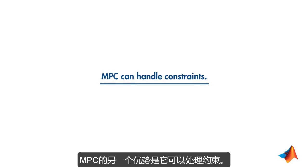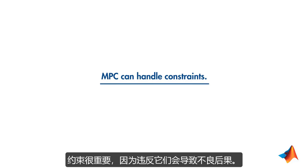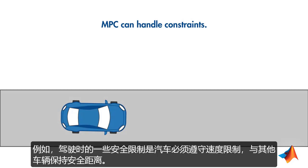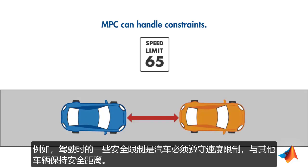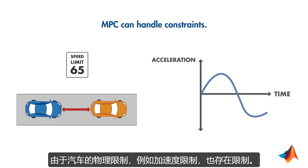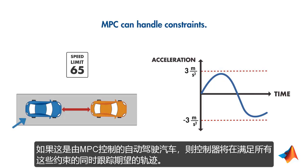Another strength of MPC is that it can handle constraints. Constraints are important because violating them can lead to undesired consequences. For example, some of the safety constraints while driving are that cars must obey speed limits and maintain a safe distance from other cars. There are also constraints due to physical limitations of the car, such as limits on acceleration. If this was an autonomous car controlled by MPC, the controller will track a desired trajectory while satisfying all these constraints.